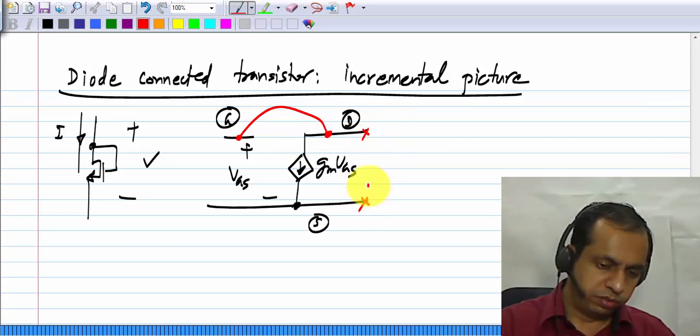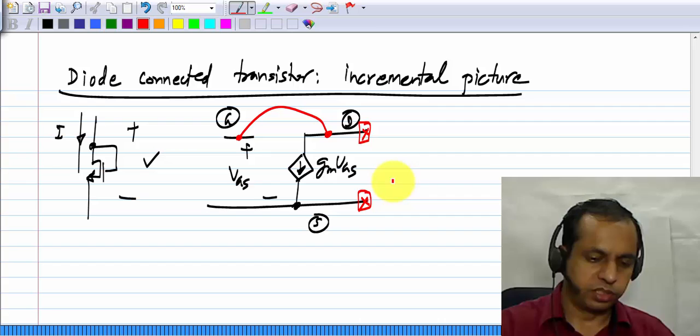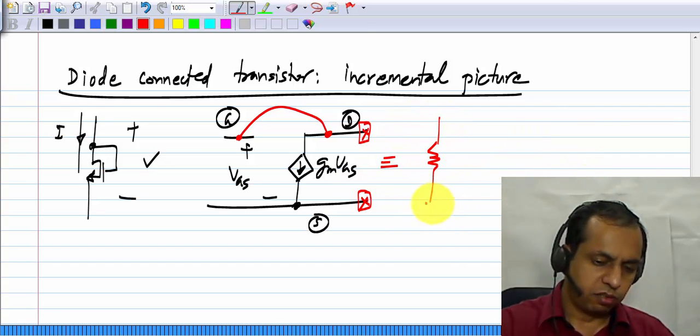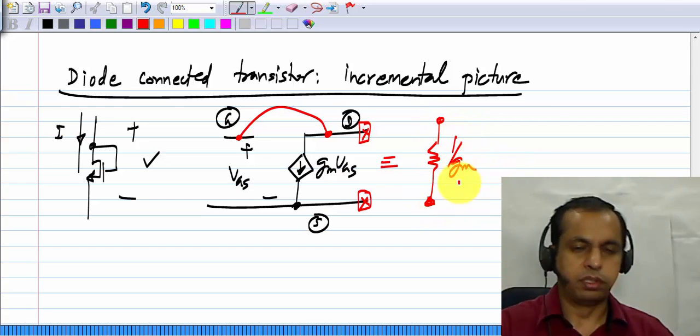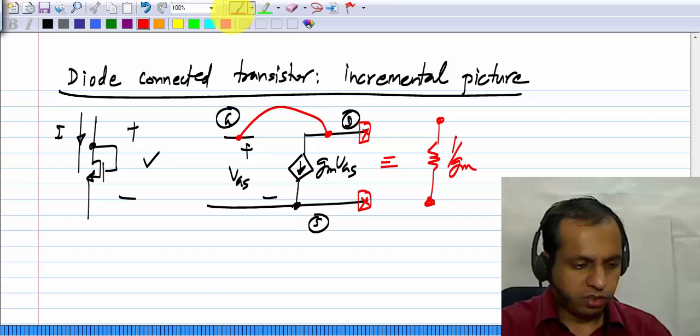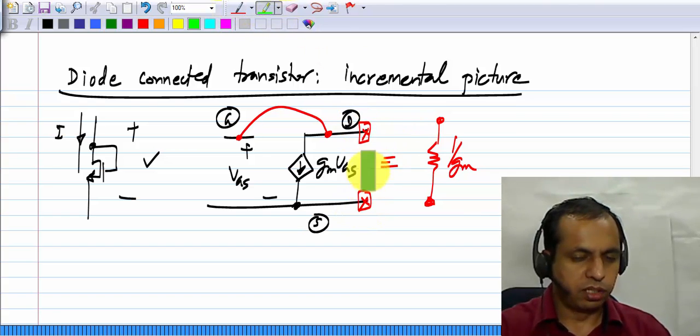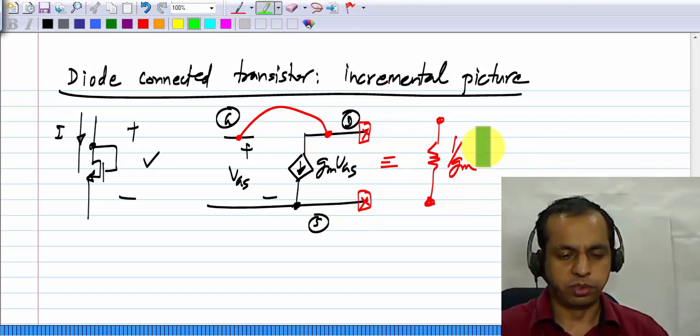Now, between these two terminals, either gate source or drain source, it is the same. This is equivalent to a resistor of value 1 by G M. This we already know. We have analyzed it. If not, you apply a test voltage here, and see what current flows. Take the ratio, you will find this.